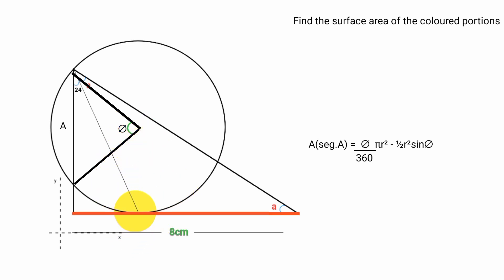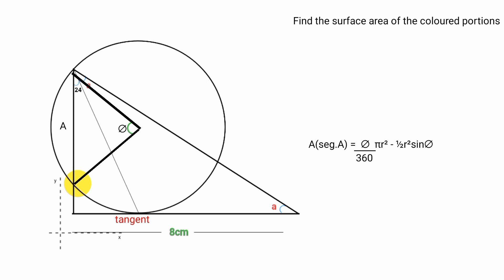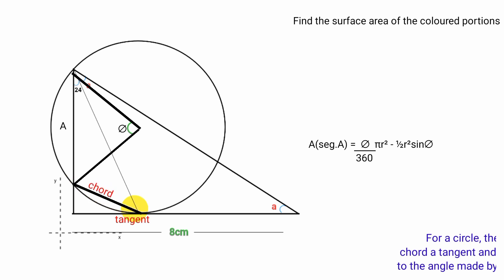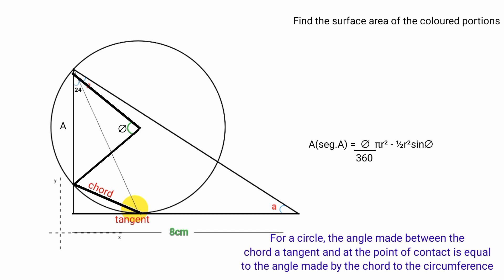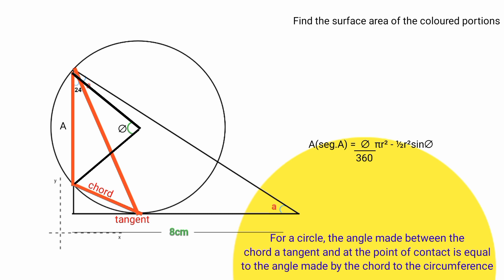This line here is a tangent to the circle because it touches the circumference from the outside. If you draw a chord from this point to this point, based on the rule of a circle — if a chord of a circle and its tangent touch at the point of contact, the angle the chord makes with the tangent equals the angle the chord subtends to the circumference.